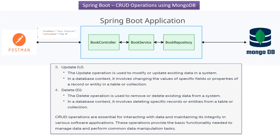U is for Update. The Update operation is used to modify or update existing data in a system. In a database context, it involves changing the values of specific fields or properties of a record or entity in a table or collection. The Delete operation involves deleting specific records or entities from a table or collection.